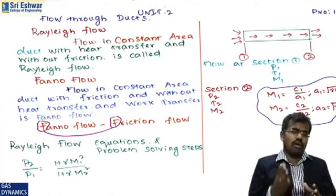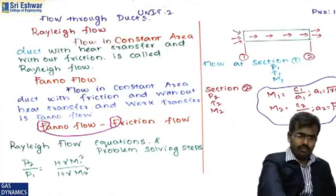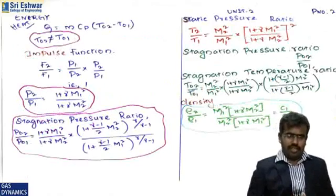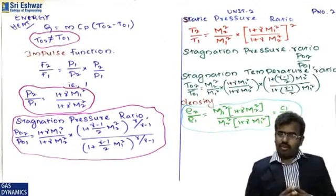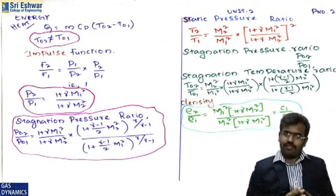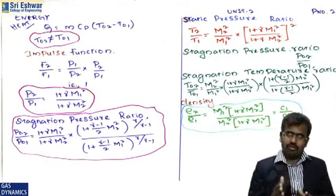The heat energy equation is Q/ṁ = cp × ΔT₀, giving heat energy in watts. This is discussed in chapter one. In Rayleigh flow, the stagnation temperature T₀₂ is not equal to T₀₁ — they are always different.